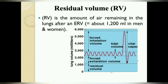Next is the residual volume. Residual volume is the amount of air which remains in your lungs even after the expiratory reserve volume — that is, even after forcibly pushing all the air out. During our normal breathing cycle, a certain amount of air always remains inside. That remaining air is called residual volume, which is 1200 ml in both men and women.